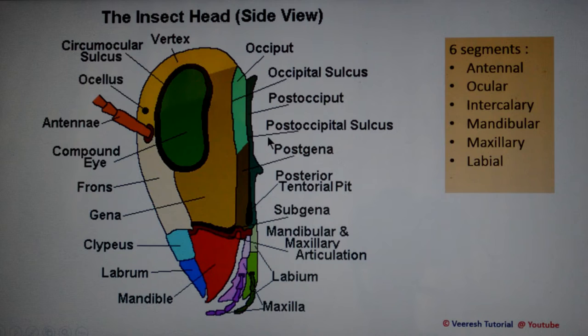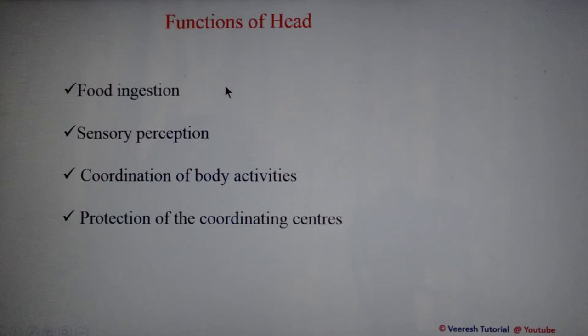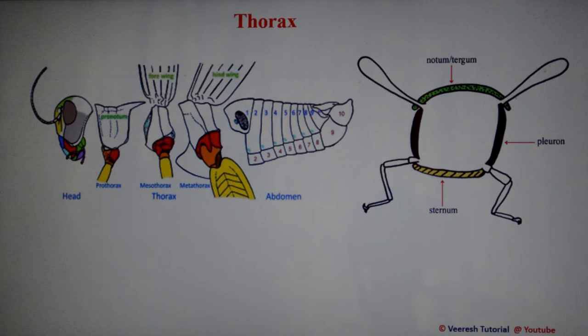There are six segments present in the insect head: the antennal, ocular, intercalary, mandibular, maxillary, and labial segments. The head joins the thorax with the help of the cervix. The main functions of the head are ingestion of food particles, sensory perception, coordination of body activities, and protection of the coordinating center.